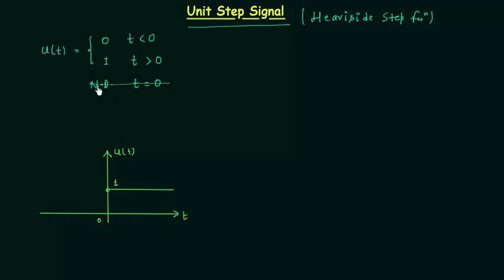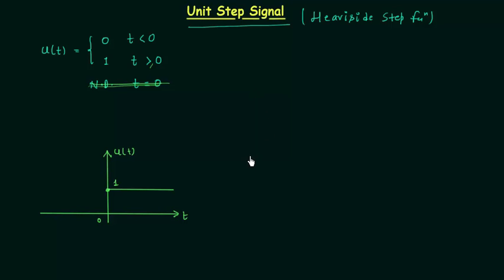So I will modify the definition: when time t is equal to 0 or greater than 0, u(t) is equal to 1. So we have u(t) equal to 1 when time t is equal to 0. We call this signal the unit step signal because it looks like the step of a staircase.